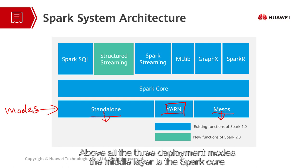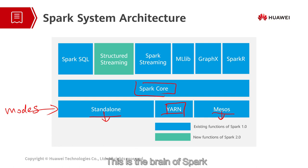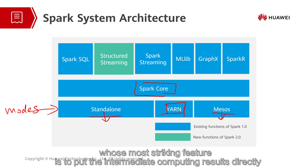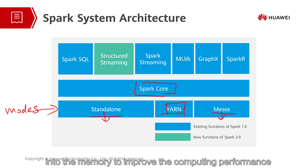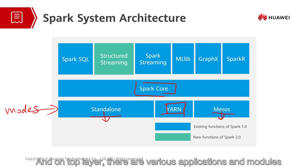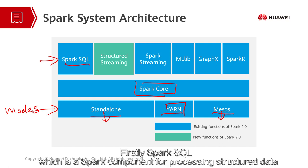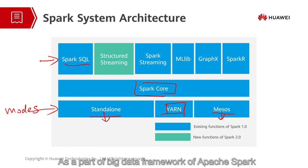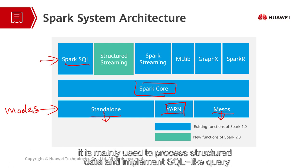The middle layer is the main layer of Spark, the brain of Spark, whose most striking feature is to put the intermediate computing results directly into the memory to improve the computing framework. And on the top layer, these are various applications and modules. Firstly, Spark SQL, which is a Spark component for processing structured data. As a part of the big data framework of Apache Spark, it is mainly used to process structured data and implement SQL-like queries.